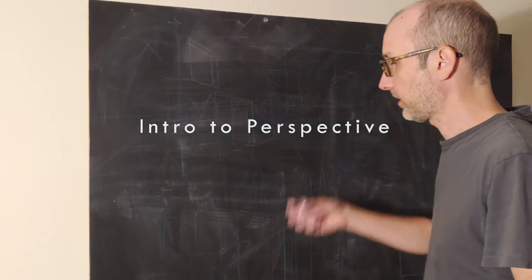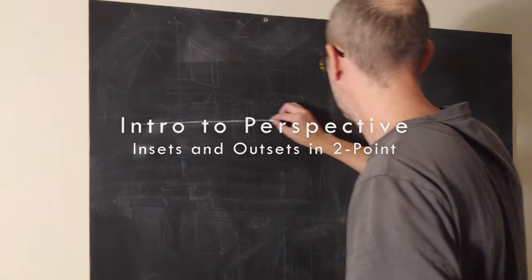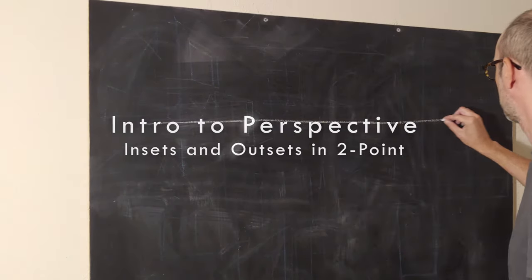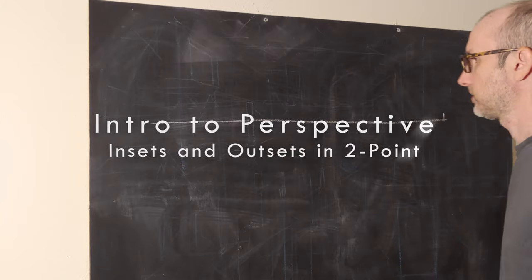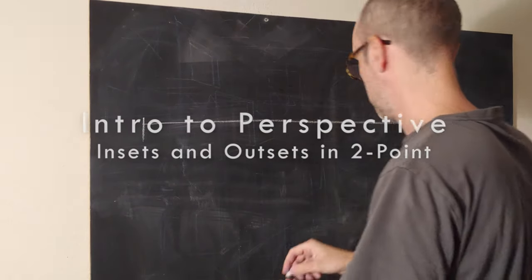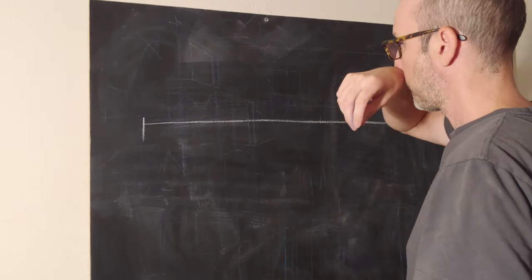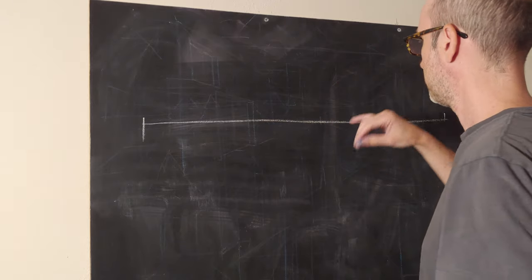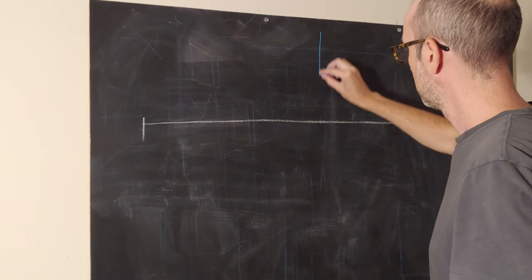Next we need to go over insets and outsets as they pertain to two-point perspective. We're going to set up a giant two-point perspective grid and do one plane that has insets and one that has outsets.